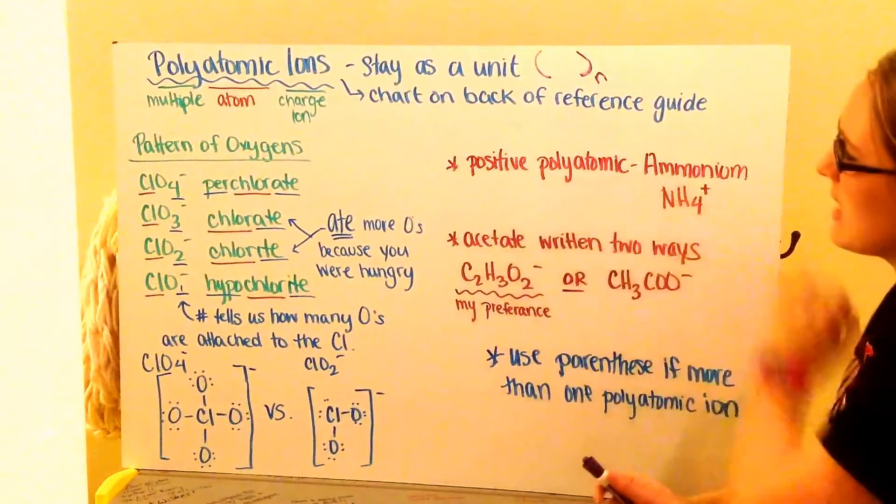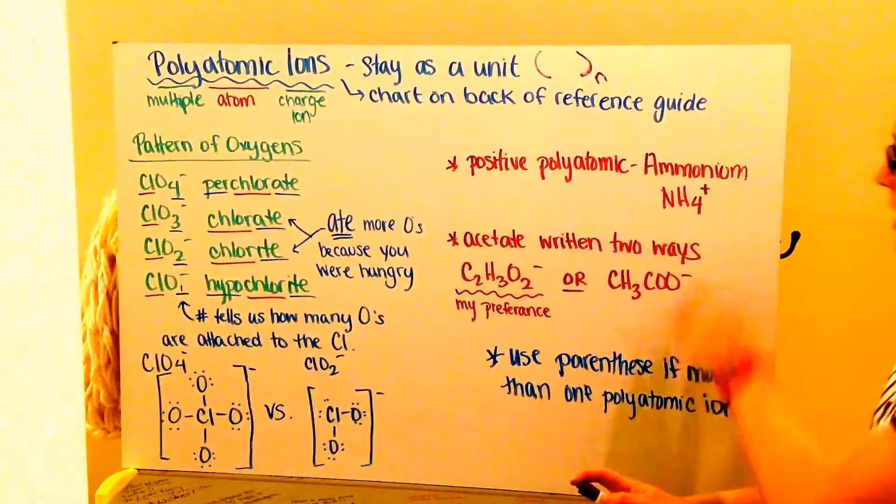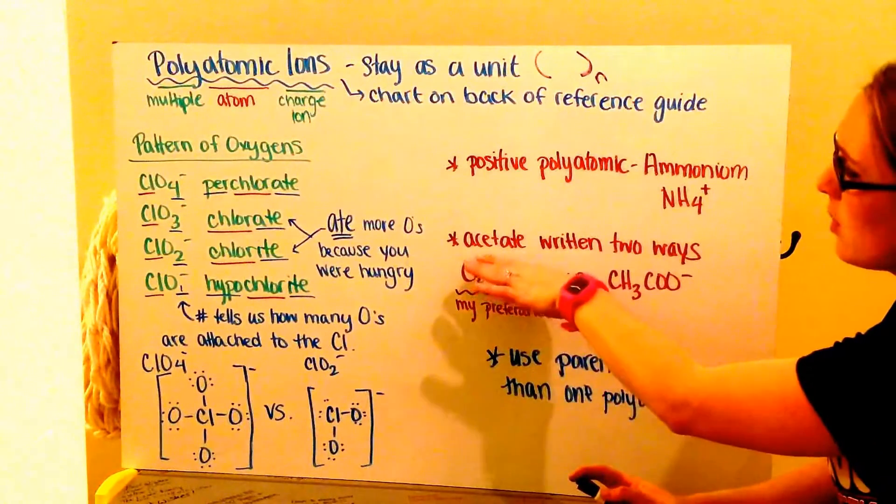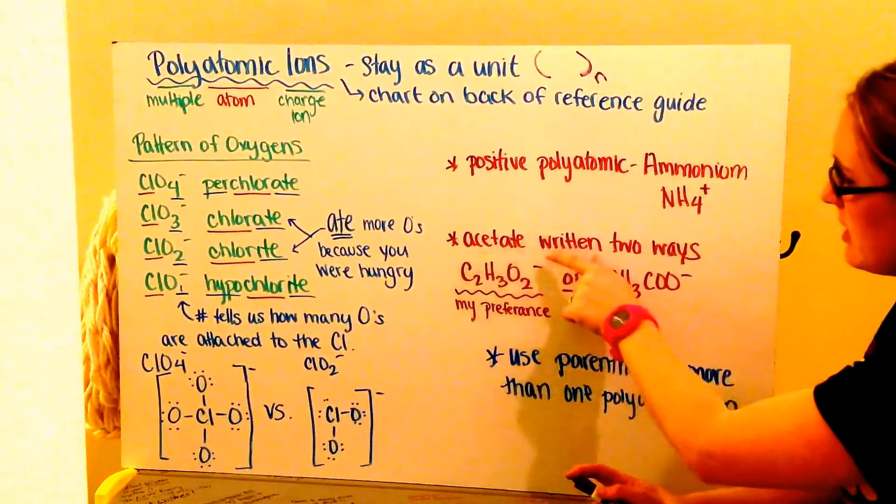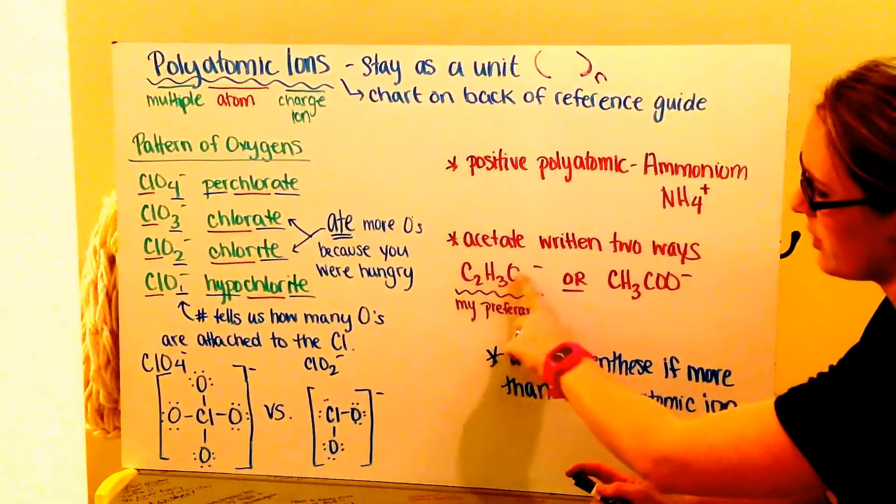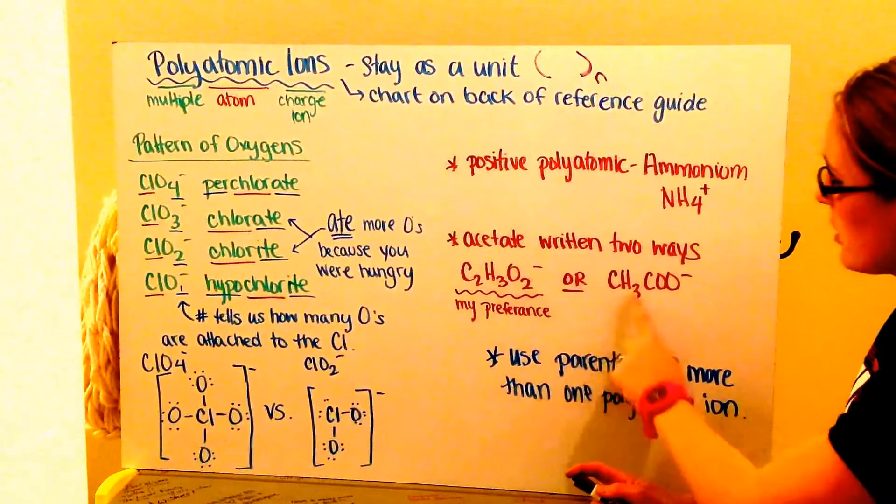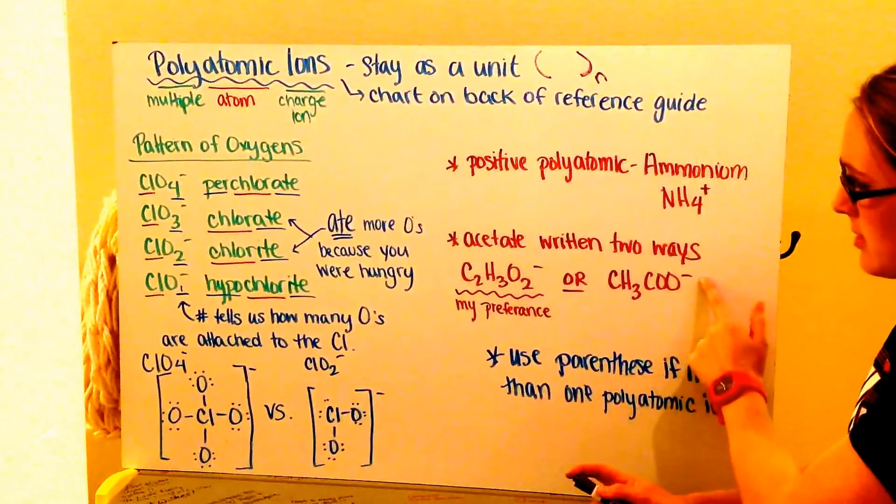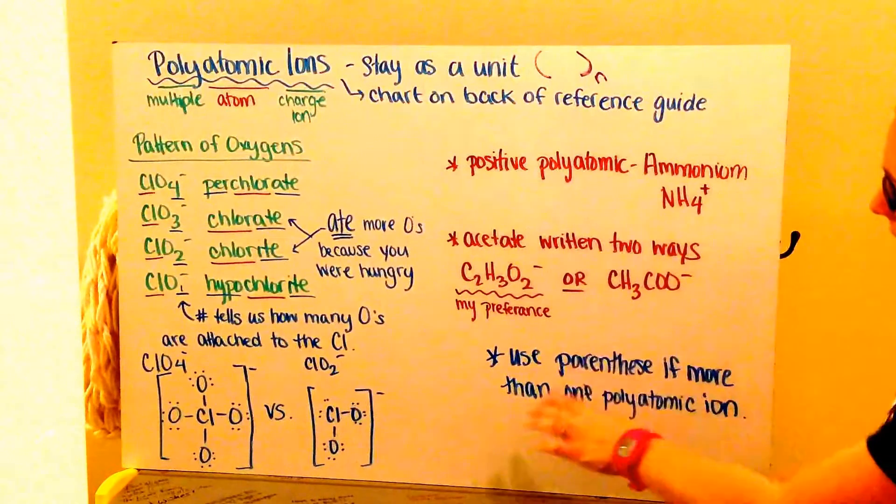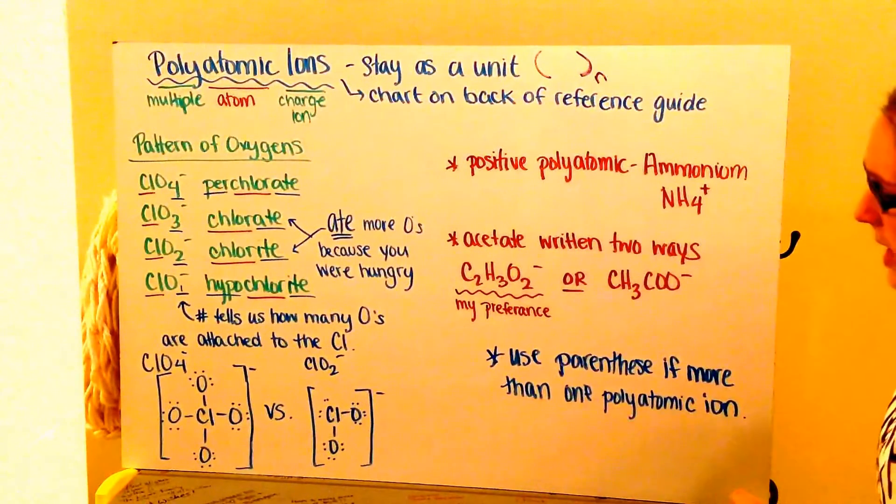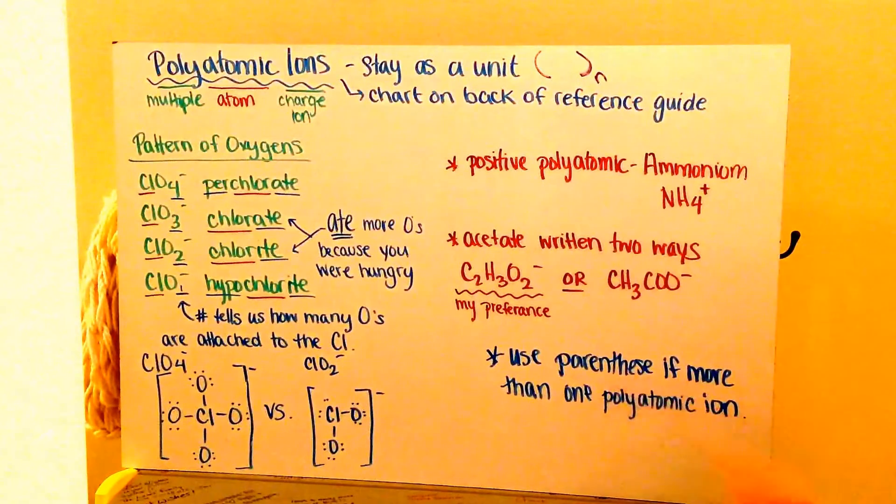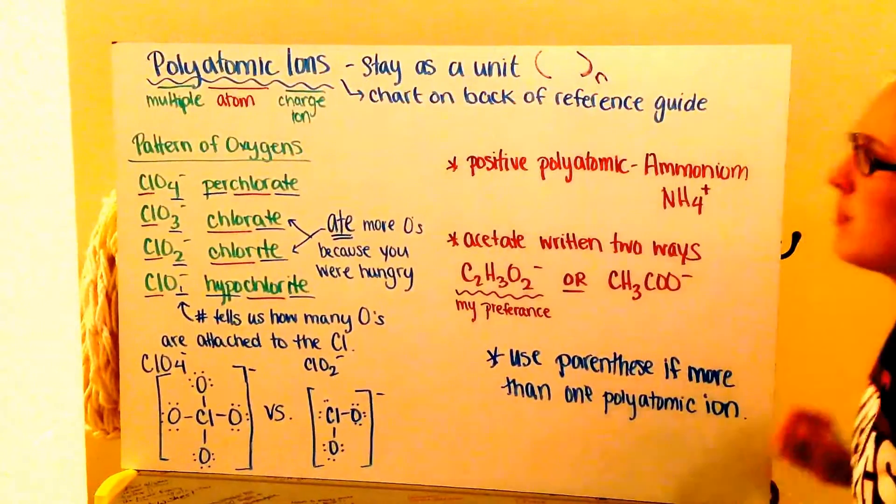There is one positive polyatomic ion that you're responsible for. And that's ammonium. It's NH4 plus. Also, another one to notice is you have acetate. This one can be written in two different ways. You have C2H3O2 minus or you can write it as CH3COO minus. My preference is this way, it's just a couple less letters you need to write. And like I said, if you have more than one polyatomic ion that you need because you have to balance it out because of the charge on your metal, you just need to use parentheses around it. And we'll go through a couple examples next.